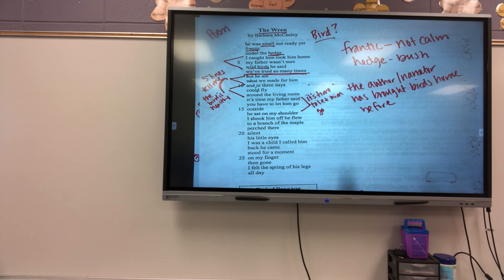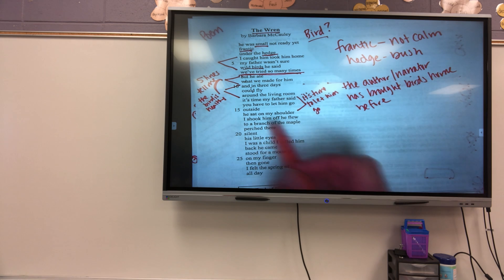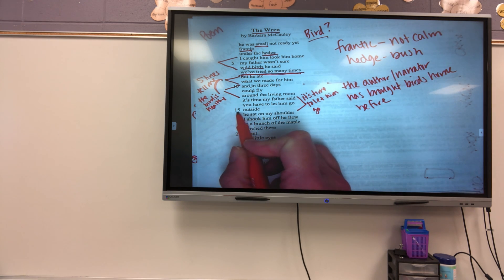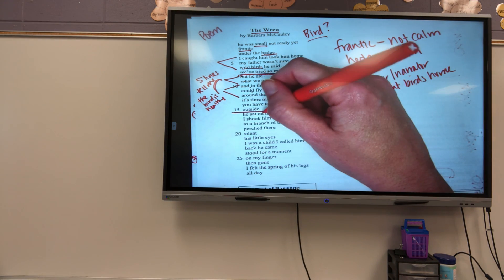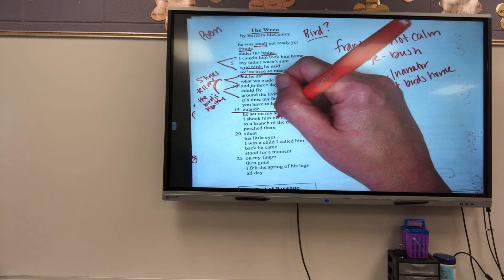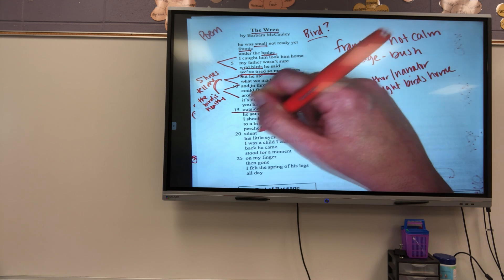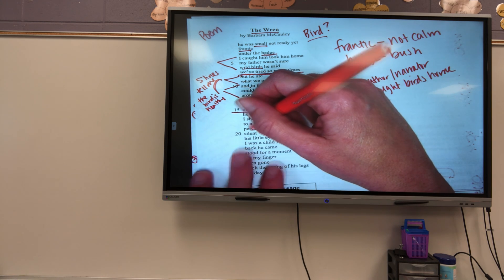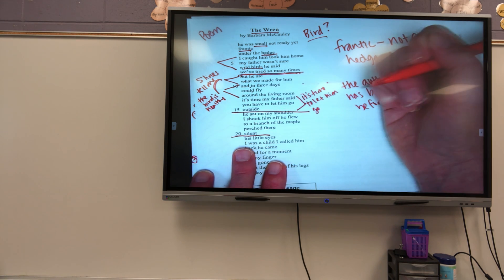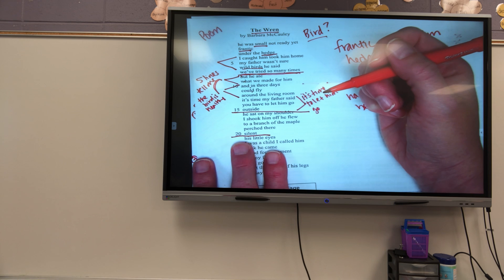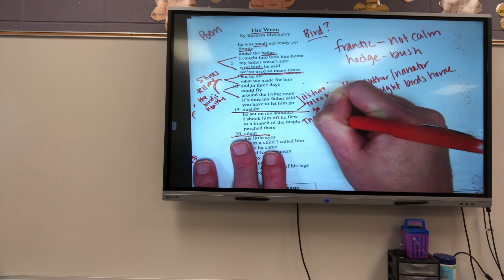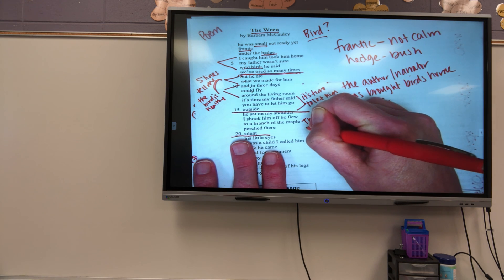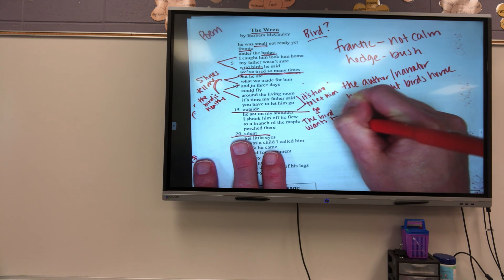So going back to line 16, where she said that he sat on my shoulder. I shook him off. He flew to a branch of the maple perch there. Silent. What is that telling me? He sat on my shoulder. Maybe he's not ready to leave her. Maybe he sat on my shoulder. The bird wants to stay.